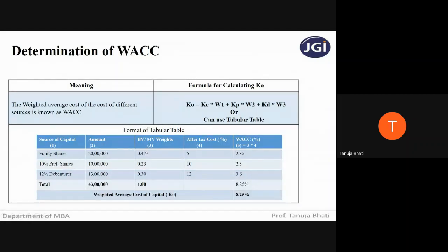Weights are assigned in the ratio of their share in total capital. Equity weight: 20 lakhs divided by 43 lakhs = 0.47. Preference weight: 10 lakhs divided by 43 lakhs = 0.23. Debentures weight: 13 lakhs divided by 43 lakhs = 0.30. The total of all weights should come to 1.